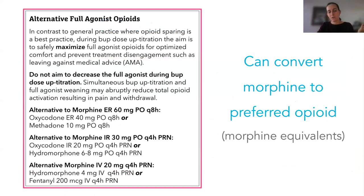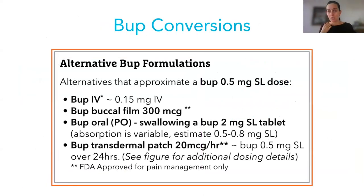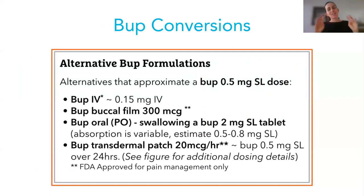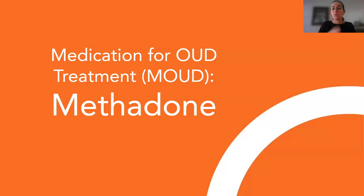Use whatever opioid you, your hospital, and your patient are comfortable with. Some hospitals don't allow quartering buprenorphine tablets — in those cases you can do this with IV buprenorphine or transdermal patches. It's all the same concept of slow and steady increases in buprenorphine dose. We'll send the guideline out at the end of the presentation.